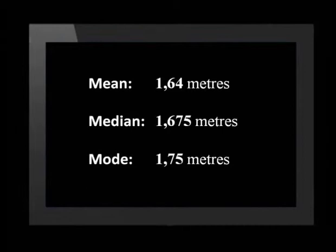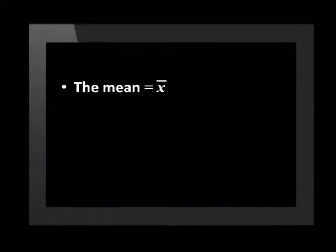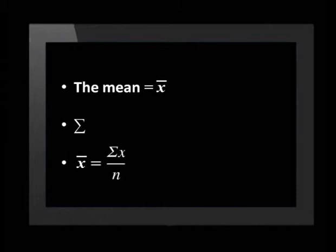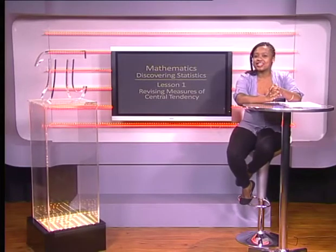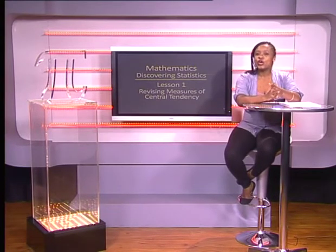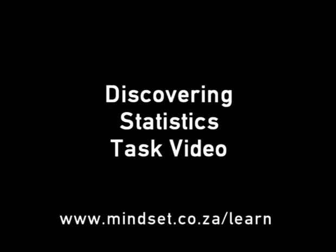Although each one is an average, our netball team example shows that each kind of average can give you a different answer. To wrap up, here is the mathematical formula for the mean. We use the symbol x-bar to represent the mean, and the Greek letter sigma to show we are adding. Therefore, the mean equals the sum of all values in the data set divided by n, which is the total number of data values. Remember to look at the tasks in the Discovering Statistics task video, and you can learn more at www.mindset.co.za/learn.